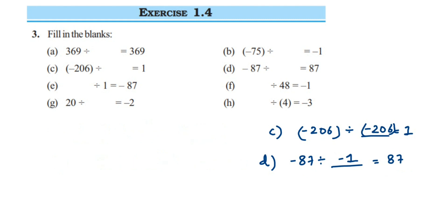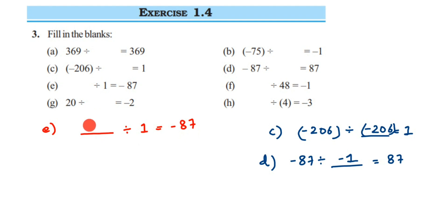Problem e: blank divided by 1 equals -87. This is the opposite of the previous question. When we divide by 1, we get the same number, so the blank must be -87, because -87 divided by 1 is -87.